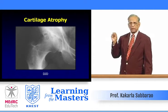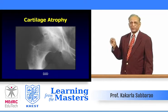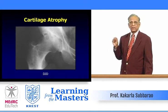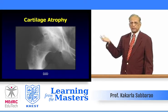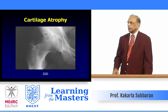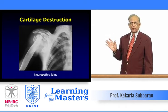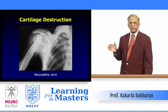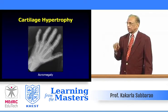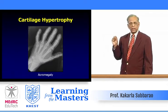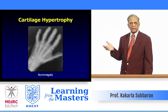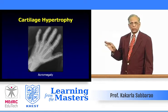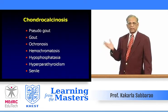Looking at the hip: the superolateral joint space of the hip is narrowed, meaning the cartilage is atrophied, with all the secondary changes following as a sequence. In neuropathic joints, there is no trace of cartilage or joint space whatsoever. For hypertrophied cartilage — for example in acromegaly — looking at the metacarpophalangeal joints, compared with normal, you can appreciate that the joint space is widened. Chondrocalcinosis refers to calcification of the cartilage.